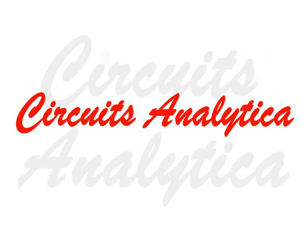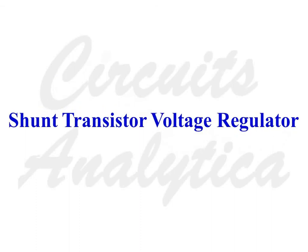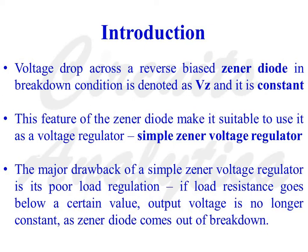Welcome to our channel, Circuits Analytica. In this video, we will discuss the shunt transistor voltage regulator. The voltage drop across a reverse biased zener diode in breakdown condition is denoted as Bez and it is constant. This feature of the zener diode makes it suitable to use as a voltage regulator — a simple zener voltage regulator.